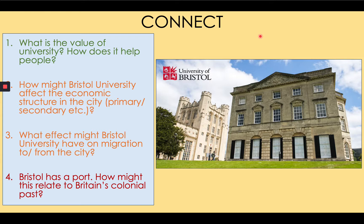Question three: what effect might Bristol University have on migration to and from the city? Bristol University increases migration, both from around the UK and internationally, as young skilled people want to improve their education to access better jobs in cities like London. Consequently, Bristol University probably leads to population growth in the city, and at the very least, it leads to economic growth.